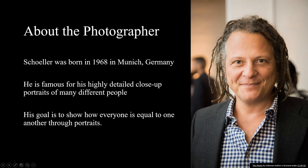Martin Schöller — this is him pictured here — was born in 1968 in Munich, Germany. He grew up in Germany and studied photography there before coming to New York City, where he was an apprentice of another famous photographer before he branched off and started his own work with portraits. His big thing is portraits.